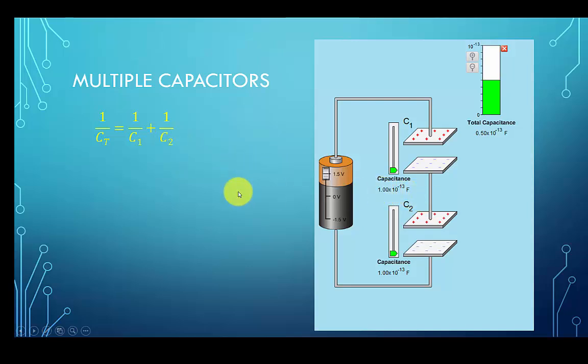Substituting the values shown here, we have 1 over 0.1 picofarads plus 1 over 0.1 picofarads, which yields 2e to the 13th. Now taking the reciprocal of this, it yields a total capacitance of 0.05 picofarads.